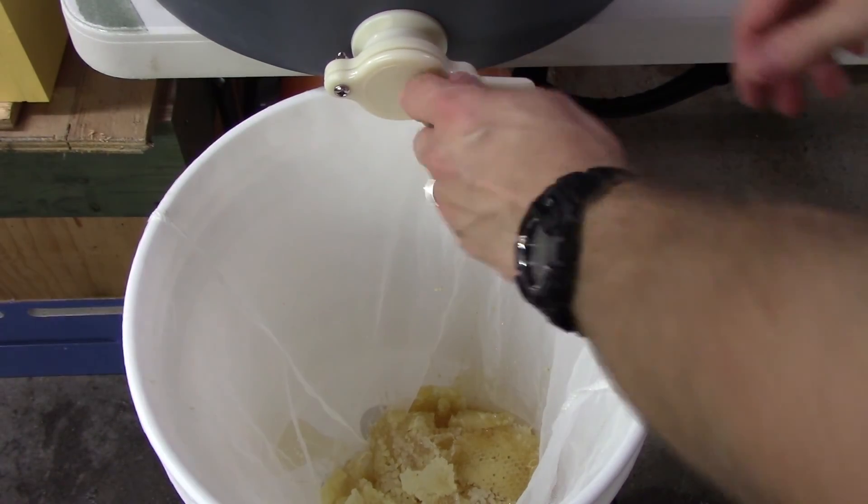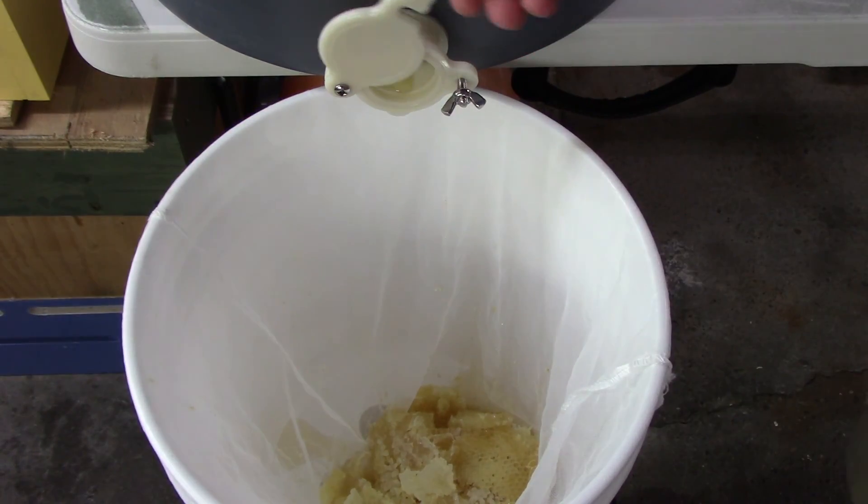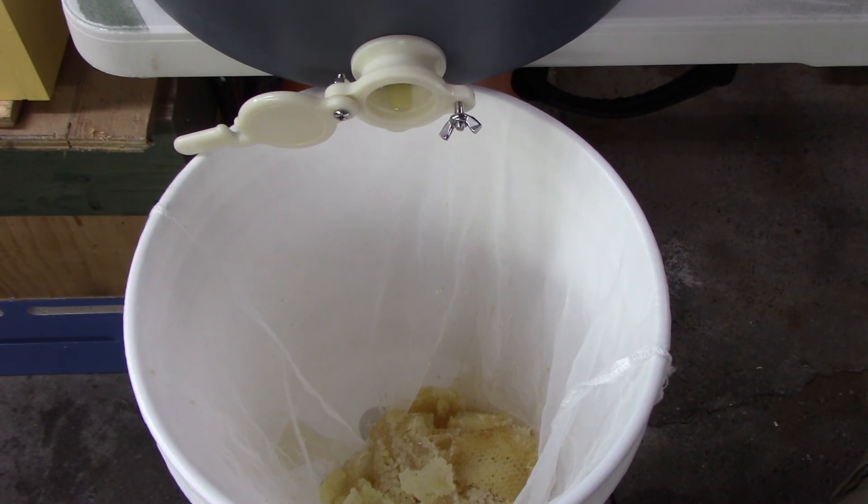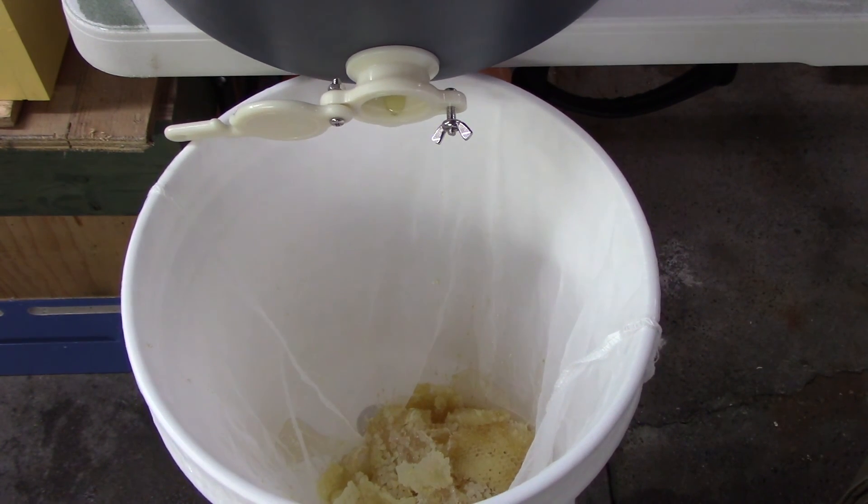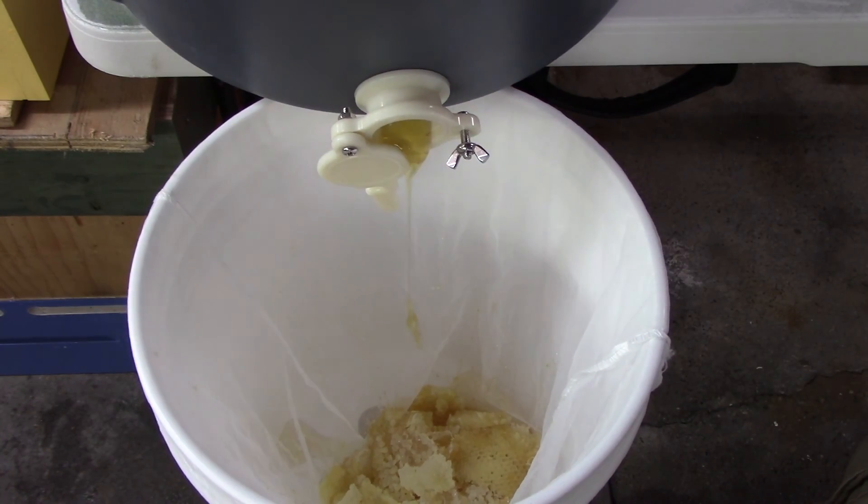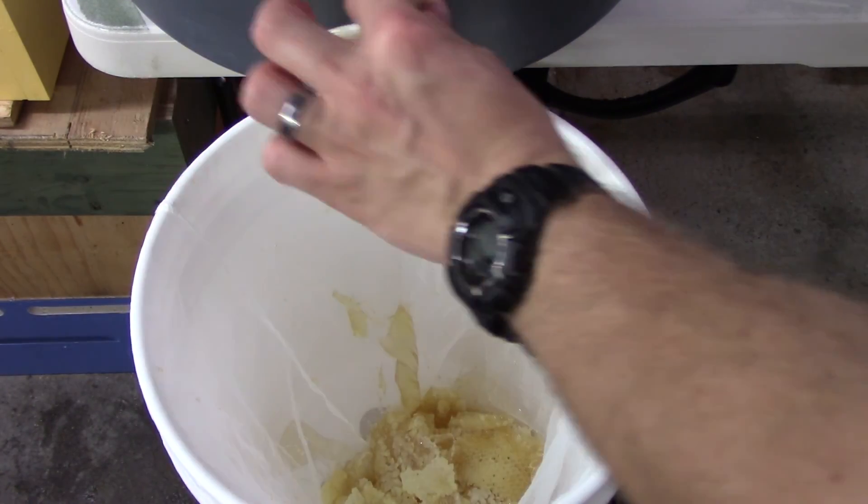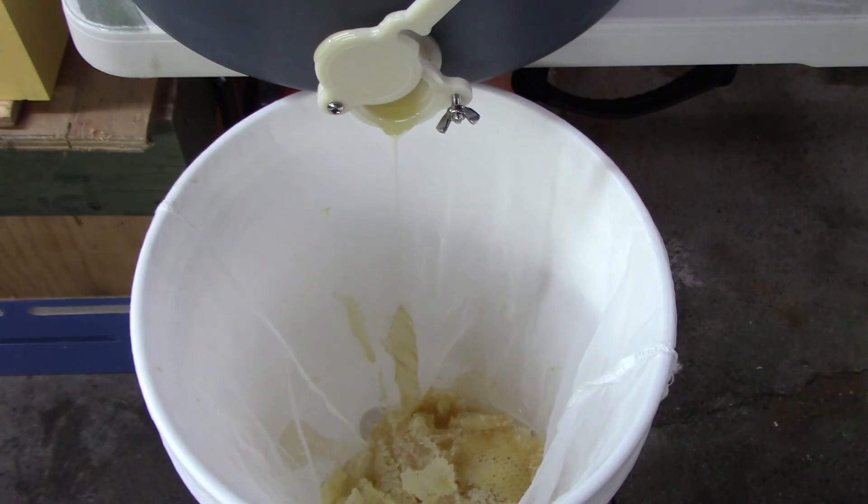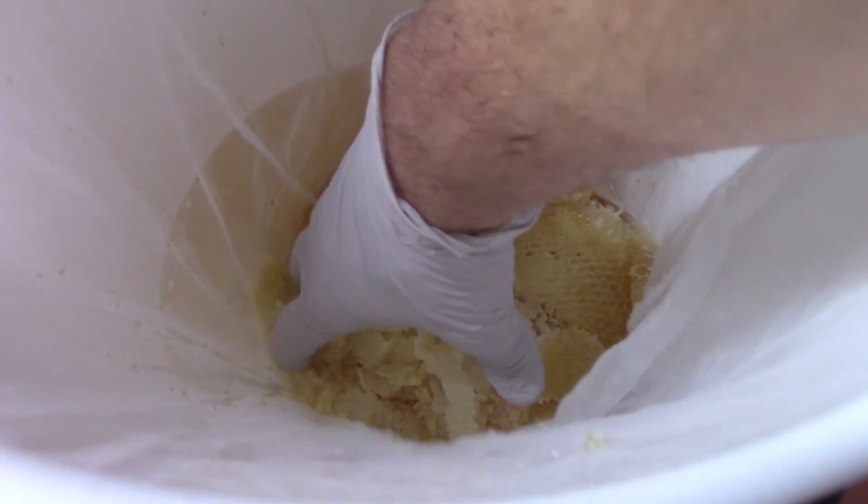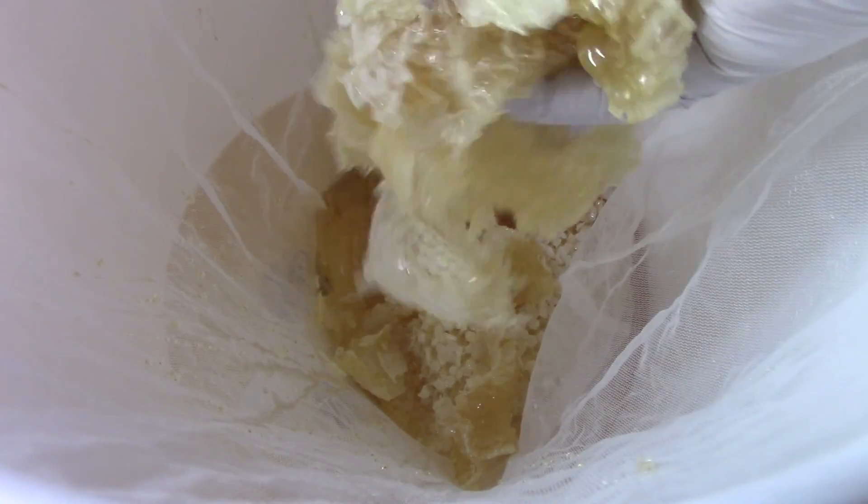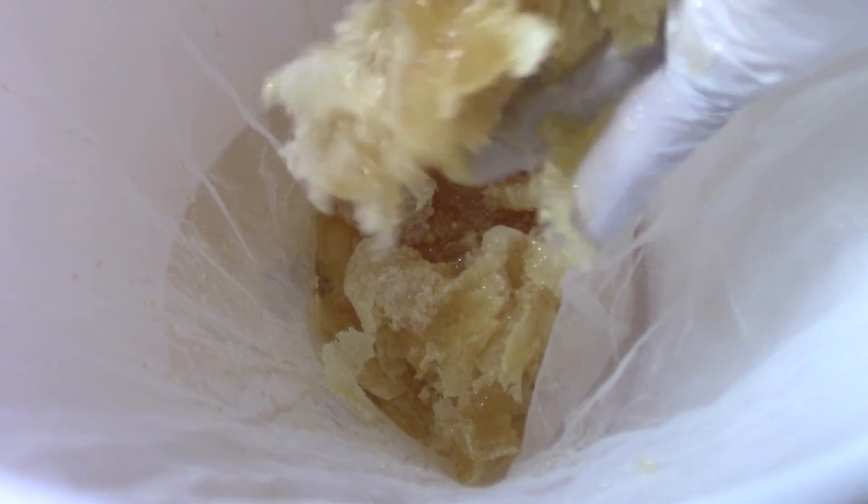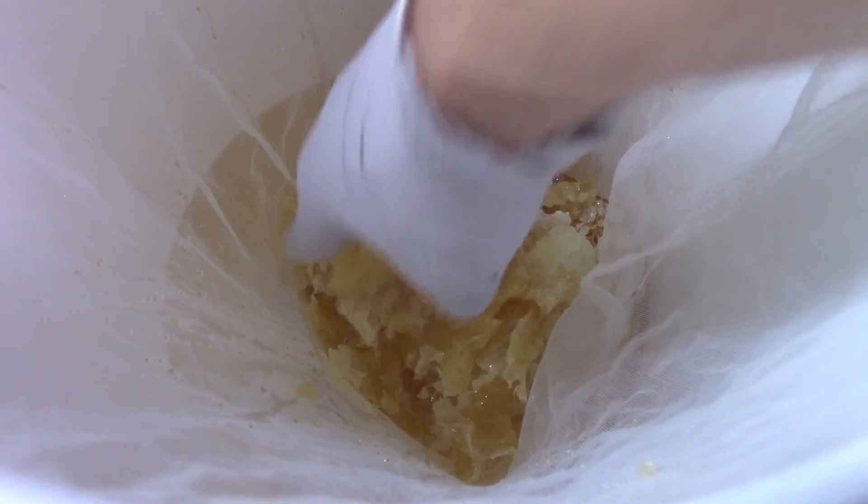And of course, take a look at that honey. So one thing you can do is just take a gloved hand and you can crush up all these cappings and bits of comb in here. And that will let the honey kind of flow out a little bit easier.